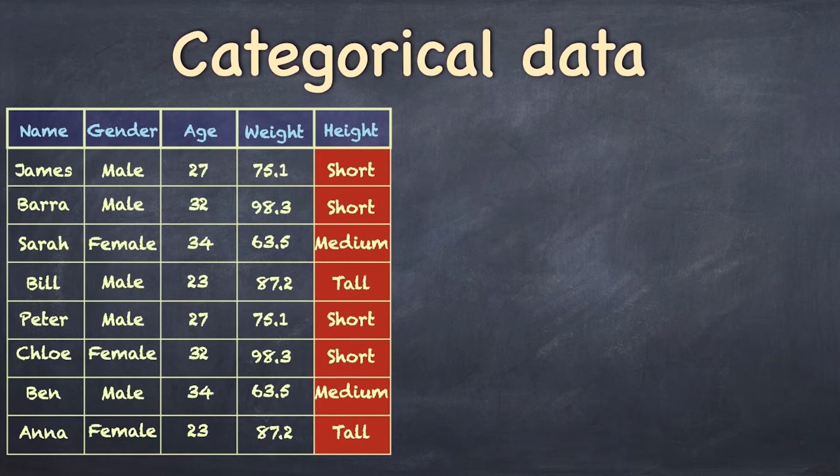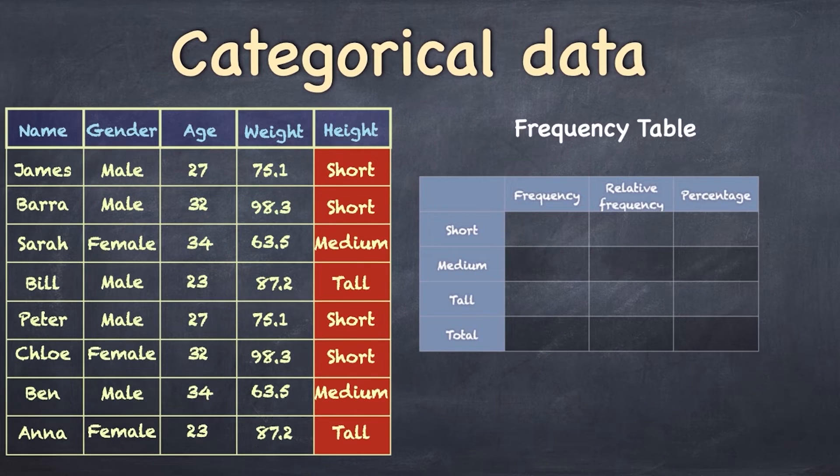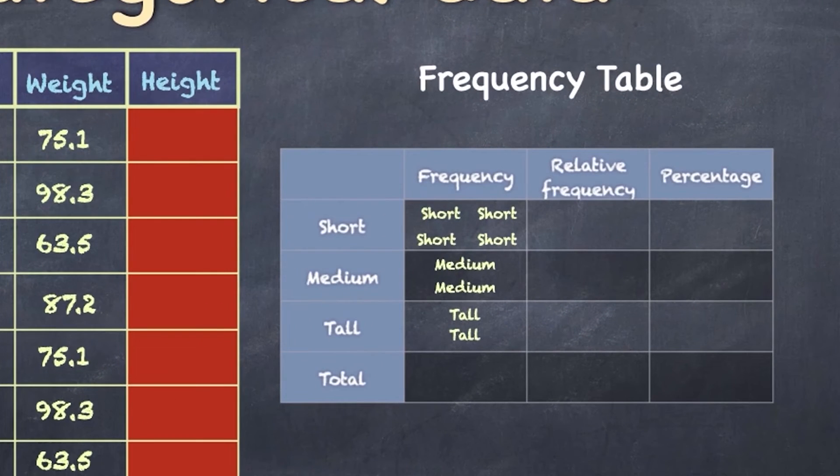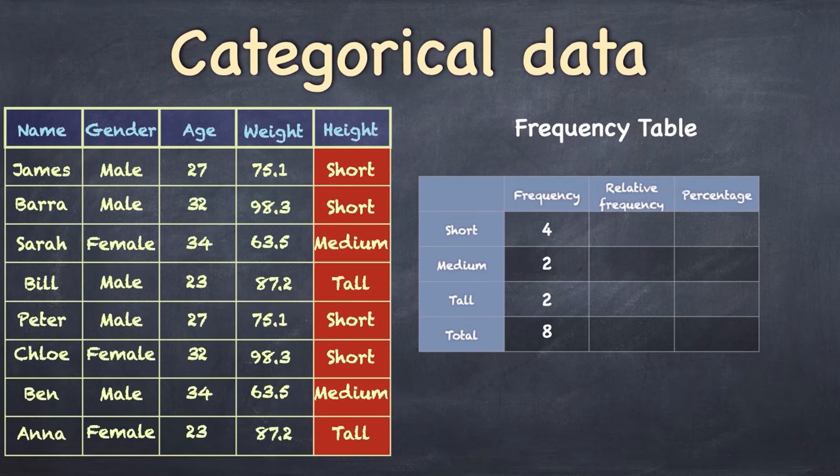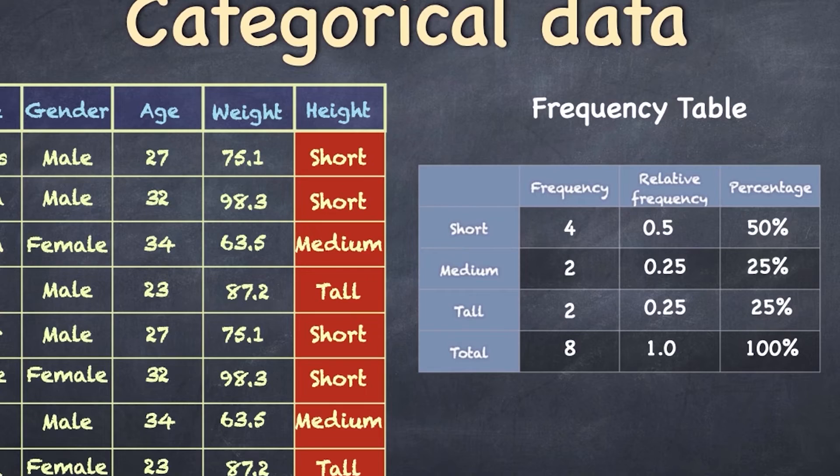Now, let's take a look at a categorical variable like height. Each observation, so James, Barra, Sarah, etc., has been categorized as either short, medium height, or tall. And we can summarize this categorical variable by counting up the number of observations that land up in each category. So, for example, we could say that there have been four people that have been categorized as short. We can say that there are two that are medium height, two that are tall, and altogether we know that there are eight altogether. Now, if you want to know what proportion of the total are short, we call that the relative frequency. Then, of course, what you do is you divide the number of short people by the total, and you've got 0.5, which is a half. And if you want to know what the percentage is, well, you simply multiply by 100. And there you go, we've got the percentage for each category.